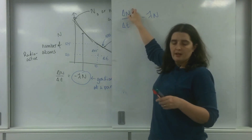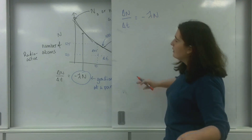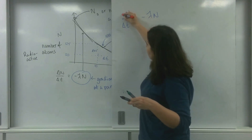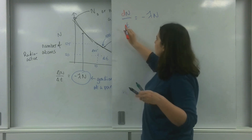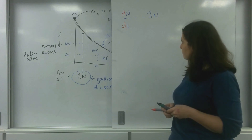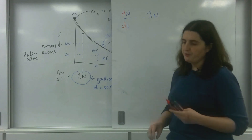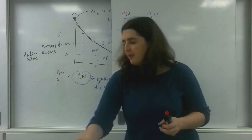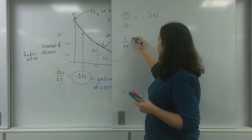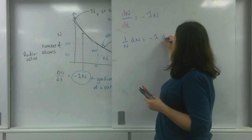The change in N over change in time equals minus N lambda. I'm going to change the notation to d notation — so using d instead of delta, meaning infinitesimal change. Then I'm going to rearrange it, so we end up with 1 over N dN equals minus lambda dt.